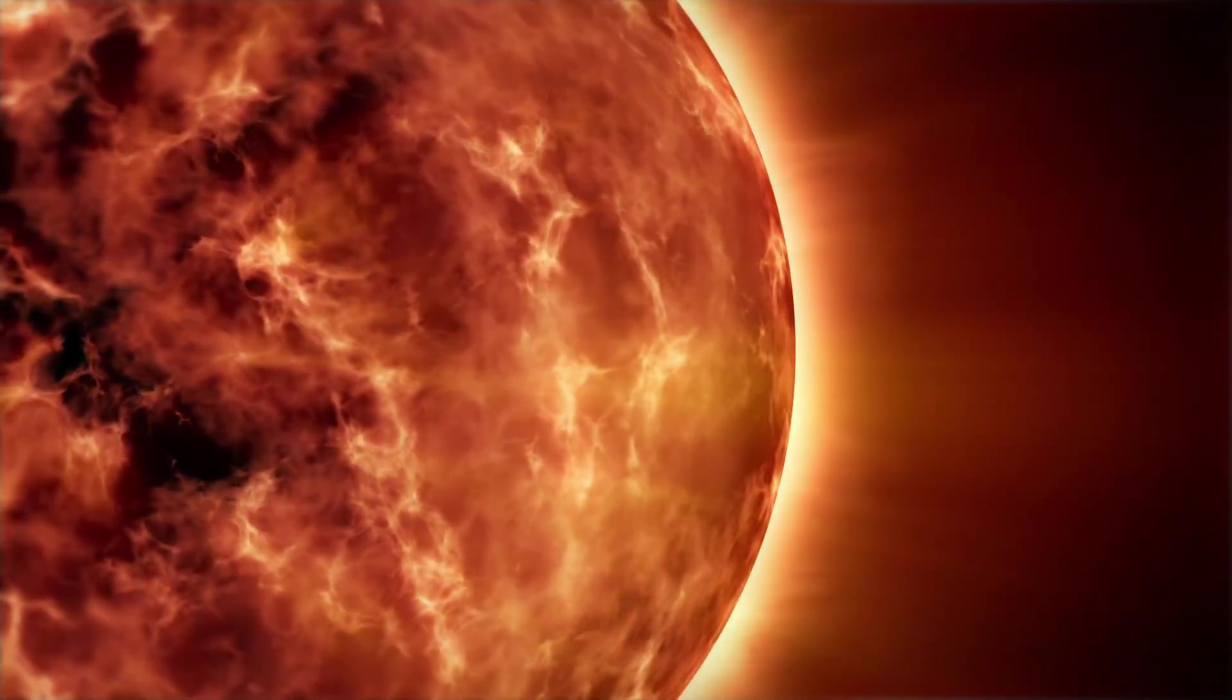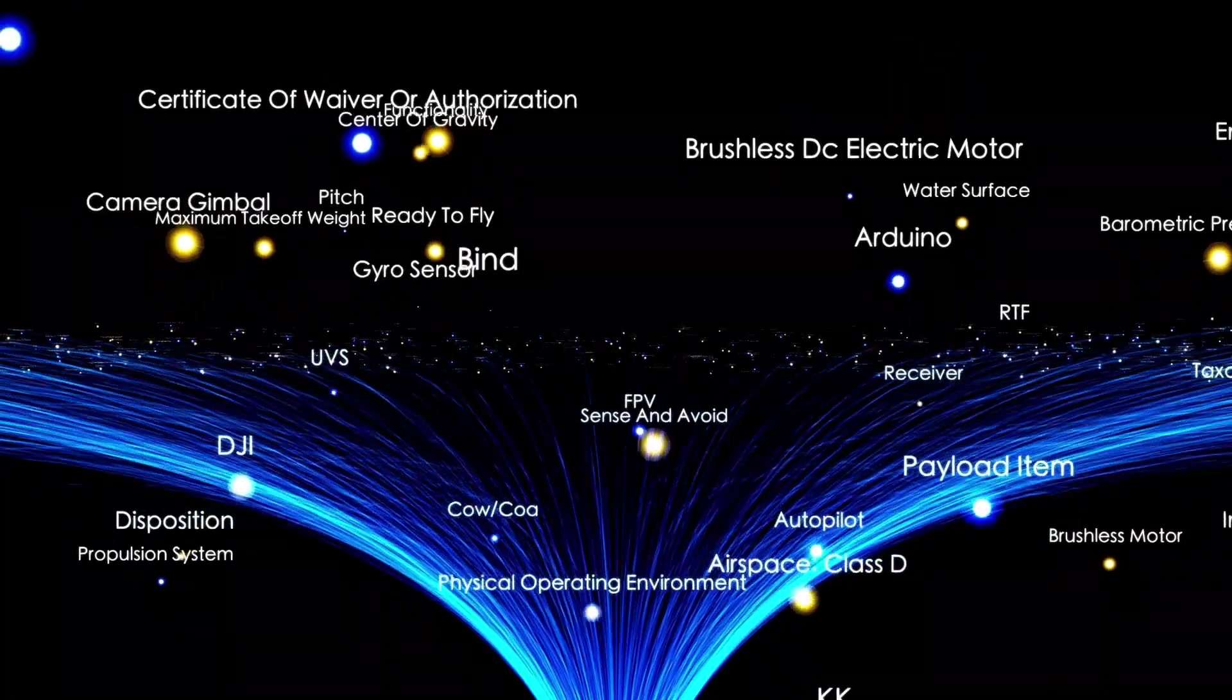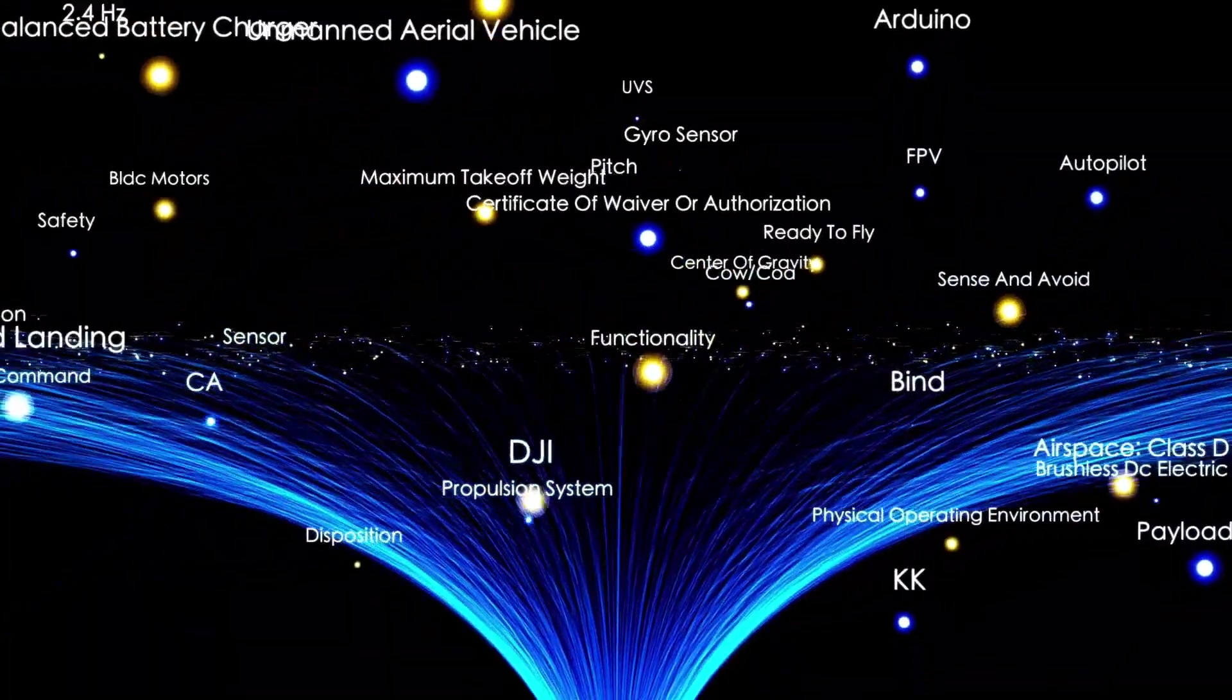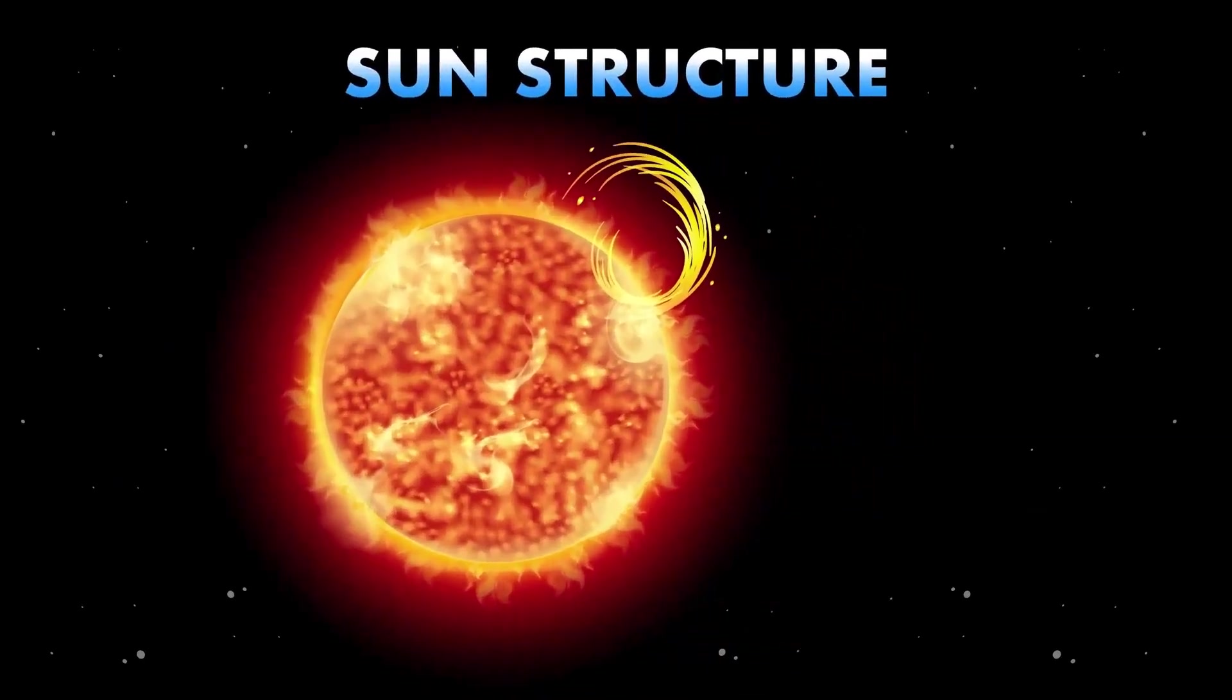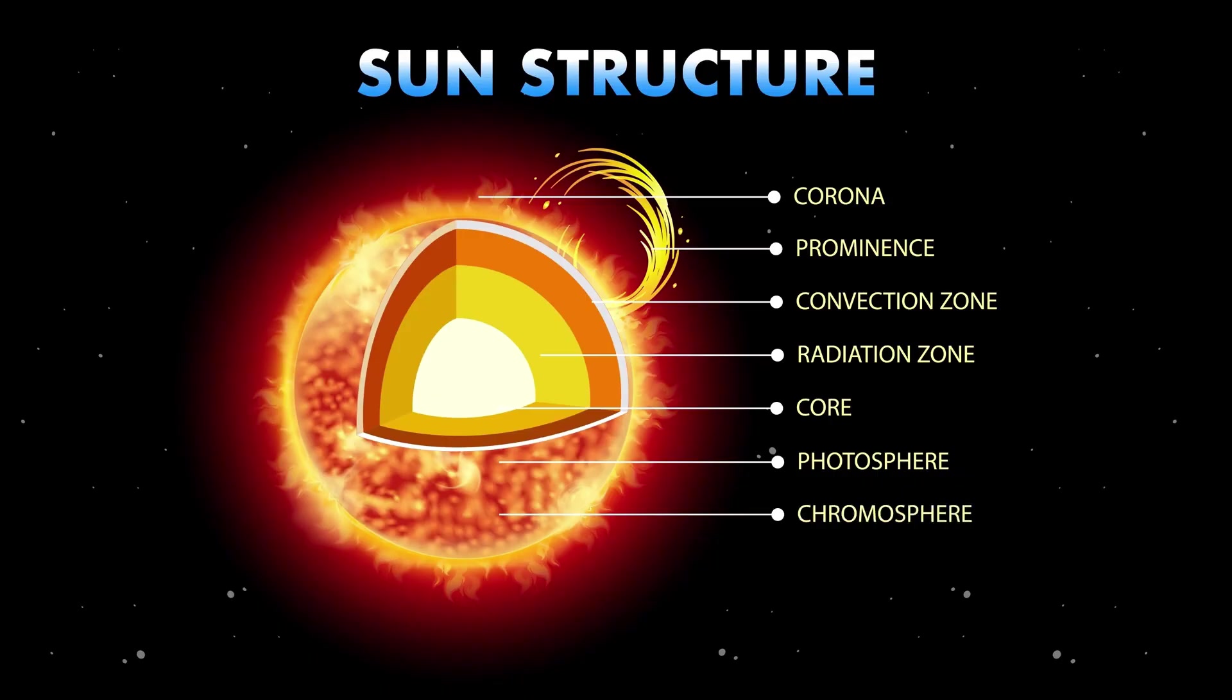Betelgeuse is like that giant that is satisfied with a low profile and doesn't need to show off its size to feel important. However, don't be fooled by her appearance. Betelgeuse is a supergiant star that is about 20 times the mass of our Sun.